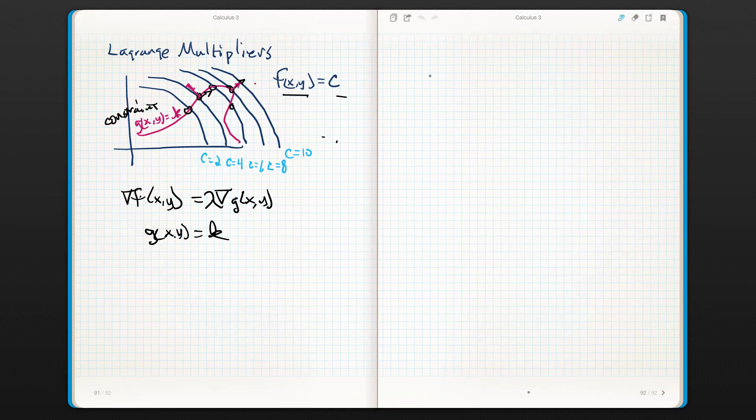Alright. Thanks for meeting me back. So here's what we're going to do. We're going to try and optimize f of xy equals x squared plus 2y squared, subject to the constraint that x squared plus y squared is equal to 1.